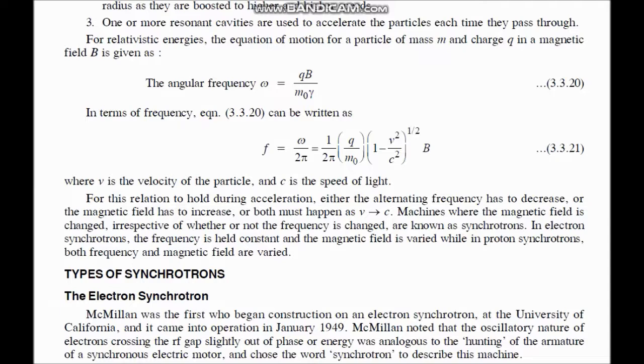That is given by this expression, b over m0 into gamma. Gamma is this quantity, 1 minus v squared by c squared square root. So relativistic mass is attained, it slows down because omega decreases.